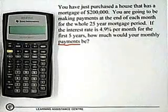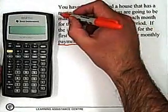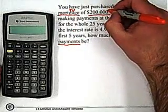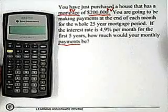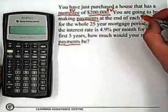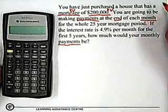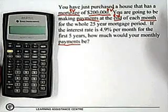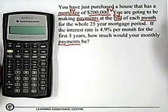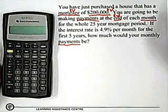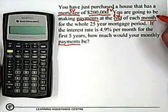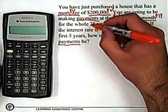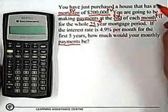The first thing we talk about is the mortgage itself. We have a mortgage of $200,000. A mortgage is like a loan, so this is another word for PV — the $200,000 is our PV. You're going to be making the payments at the end of each month, so our calculator needs to be in end mode, which it should always be set to unless you switch it to begin. The payments are made at the end of the month, so PY is 12, for the whole 25-year mortgage.